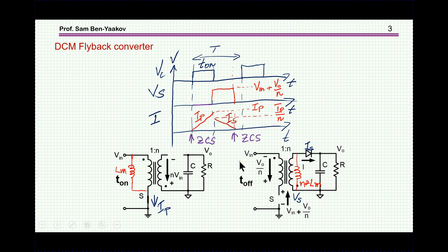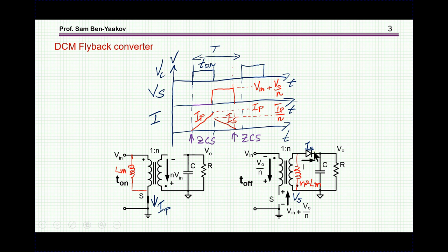The nice thing about this DCM operation is that you start with zero current at the primary, so this is actually zero current switching at the primary, because there is no current in this inductor as you turn this switch on. Also, as the current goes down to zero at the secondary and it's disconnected, you have zero current switching of the diode at turn-off, when it's going from the on state to the off state. So this is nice — it's reducing losses.